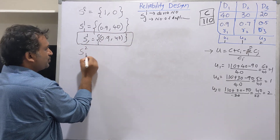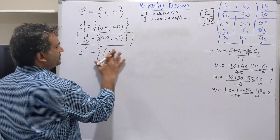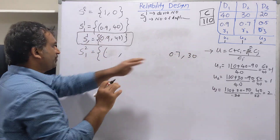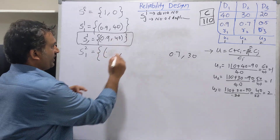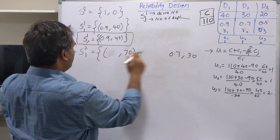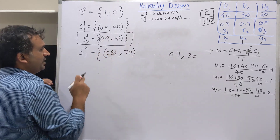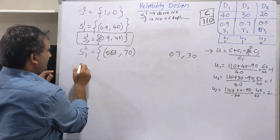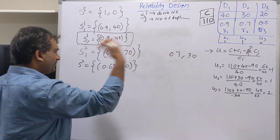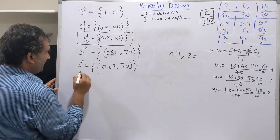In the second stage, S2 has one copy maximum. Device 2 reliability is 0.7 and cost is 30. Accumulating with device 1: cost is 30 + 40 = 70, and reliability is 0.7 × 0.9 = 0.63. Since only one copy is allowed, S2 = {(0.63, 70)}. If multiple copies were available, we would compute S2,1, S2,2, S2,3 and combine them all.